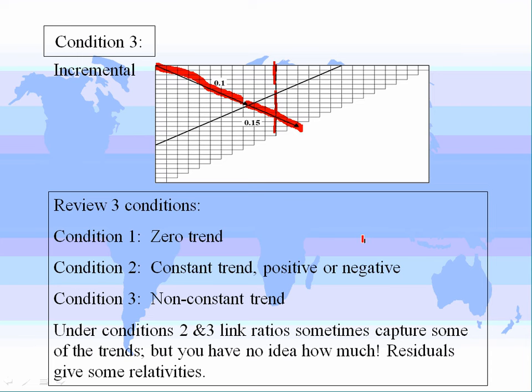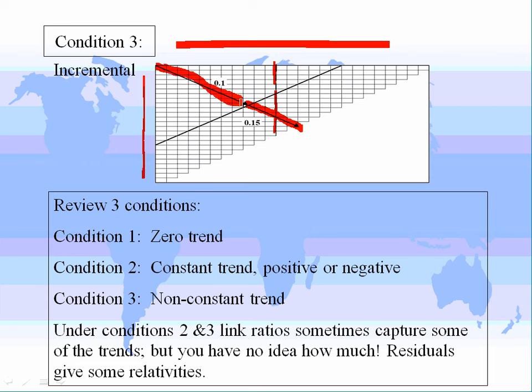This video is an introduction to the Probabilistic Trend Family modeling framework, with emphasis on modeling framework, where you try to design a model that captures the trend structure in three directions: development year, accident year, and calendar year. Not just the trend structure, but also the quality of the volatility about the trend structure — that becomes an integral part of the model.